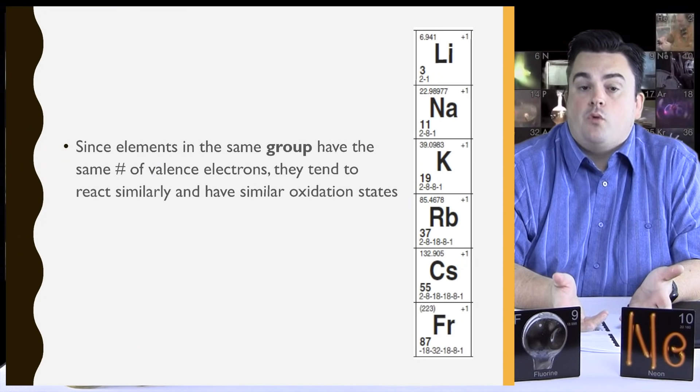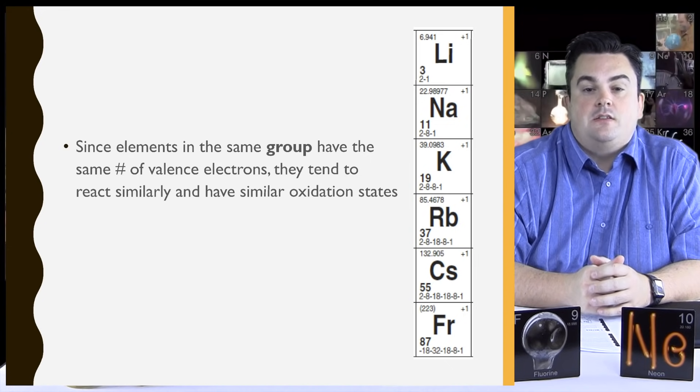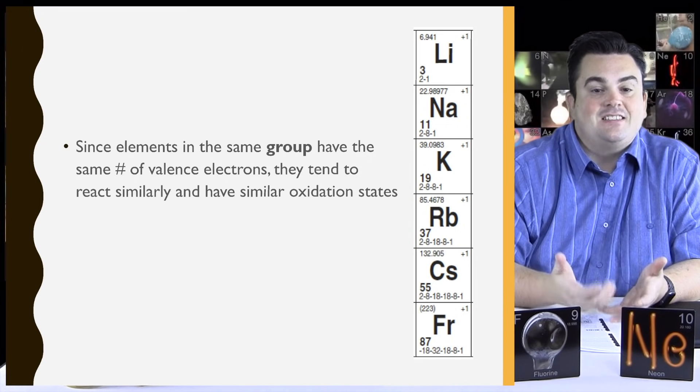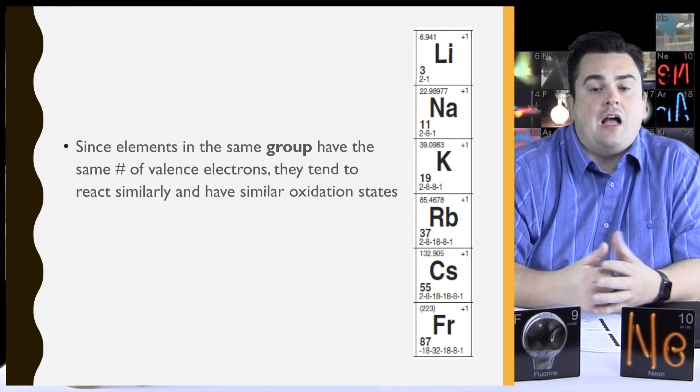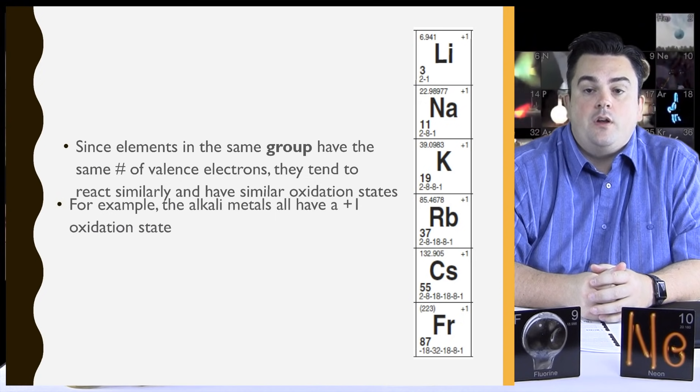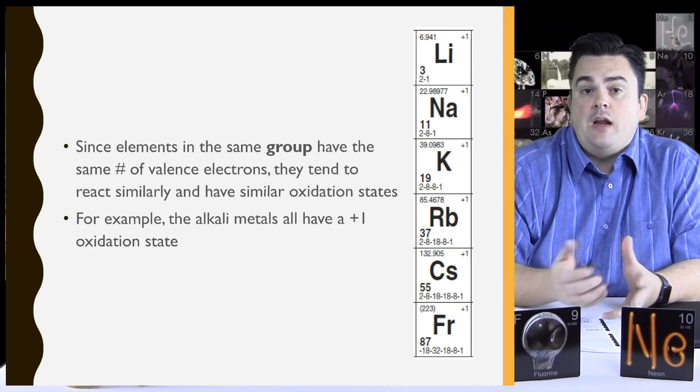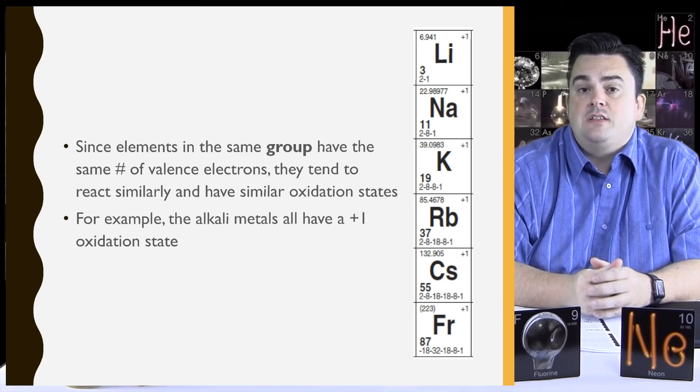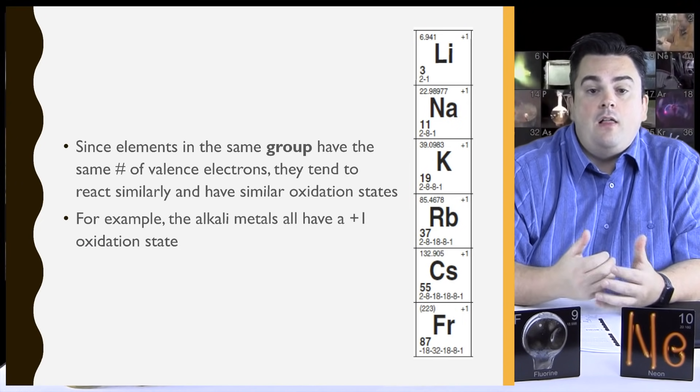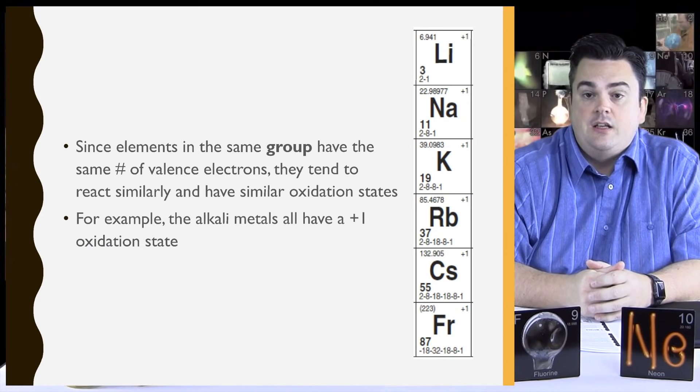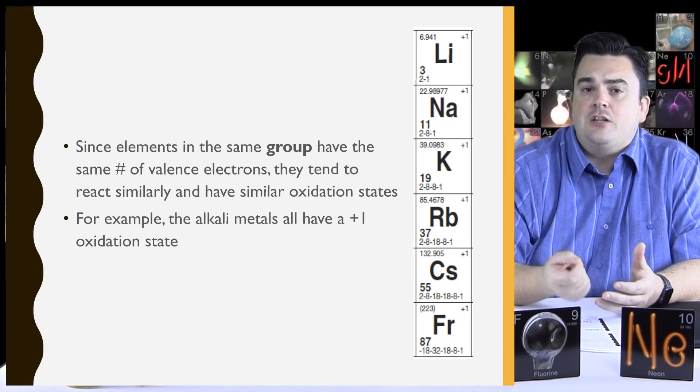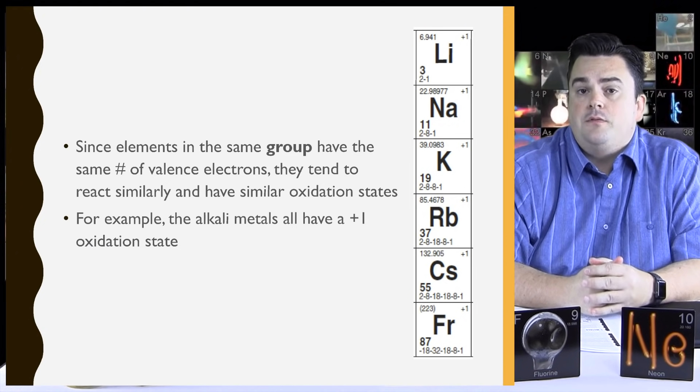Since elements in the same group have the same number of valence electrons, they tend to react similarly and have similar oxidation states. For example, if you look at the column of elements that we have on the right here, this is group 1, this is the alkali metals. They all have a plus 1 oxidation state. And if you look at that last electron shell, they all have one valence electron.